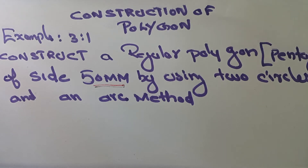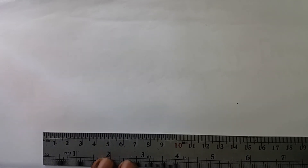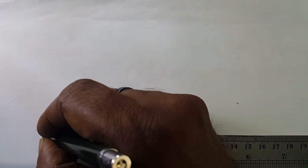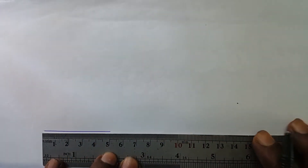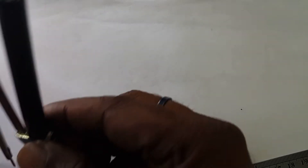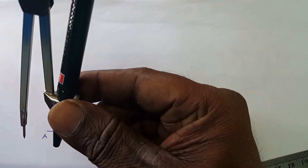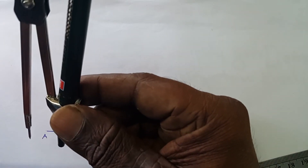Now, how to construct that type of problem? For that, first we have to draw a line AB keeping 50mm length. Take your compass and set a radius of 50mm in your compass.